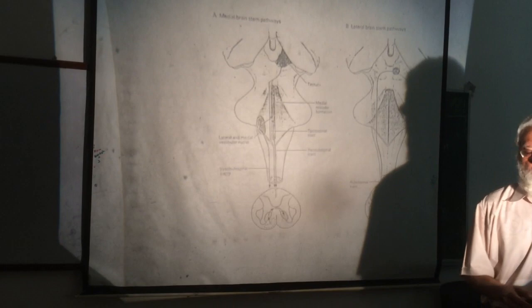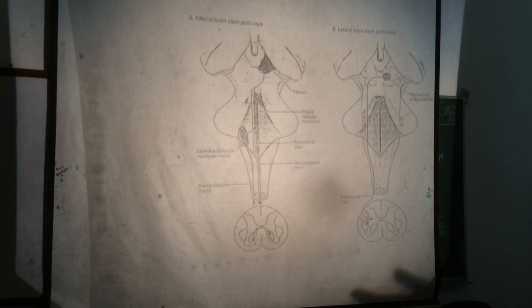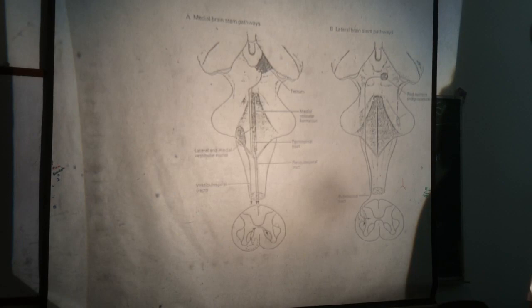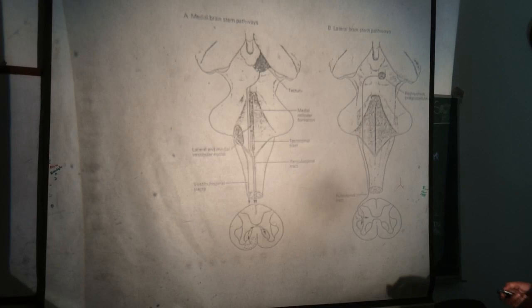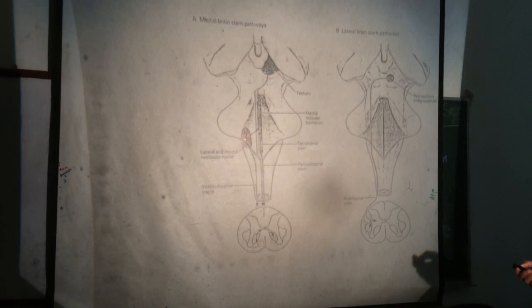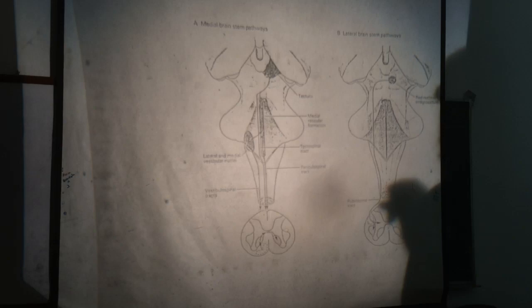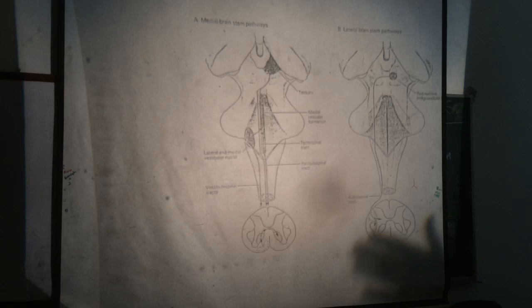The vestibular nuclei are present in the lower pons and medulla oblongata, on the floor of the fourth ventricle. Here you can see the lateral and medial vestibular nuclei. The main vestibulospinal tract originates from the lateral vestibular nucleus.